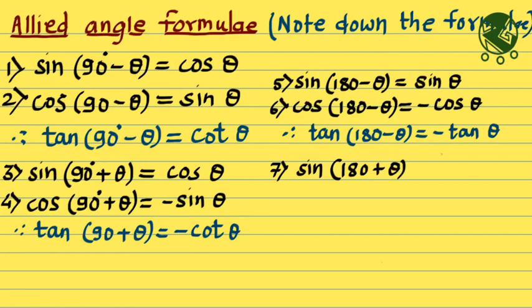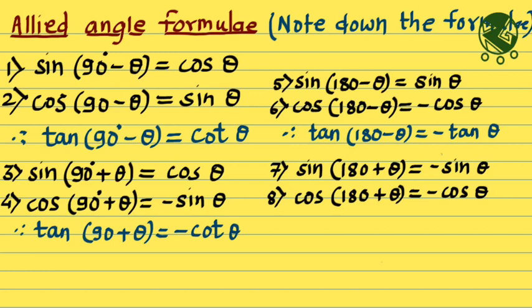Sine of 180 plus theta is equal to minus sine theta. Cos of 180 plus theta is equal to minus cos theta. Hence, tan of 180 plus theta is equal to tan theta.